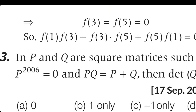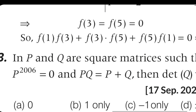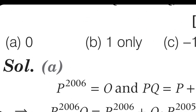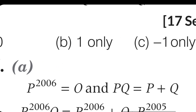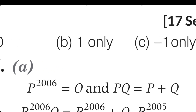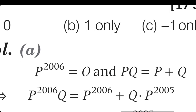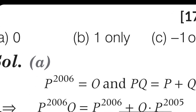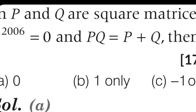Let's see how to solve this sum. We use analogy. In the exam hall, we need to think about how to approach it — try to answer without fully solving the sum. Given P to the power 2006 equals 0 and P into Q equals P plus Q.